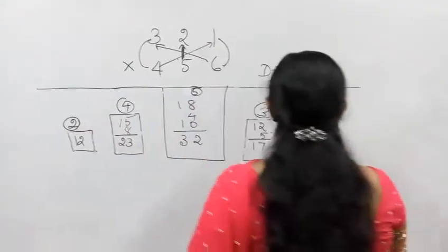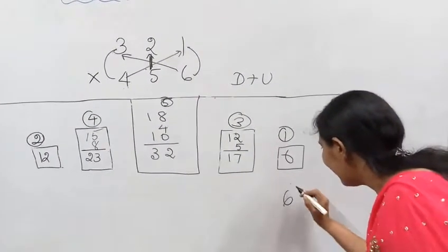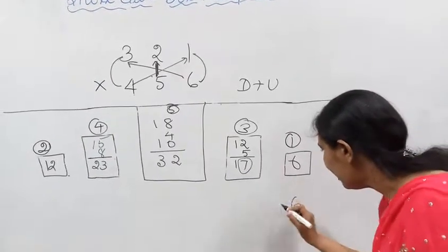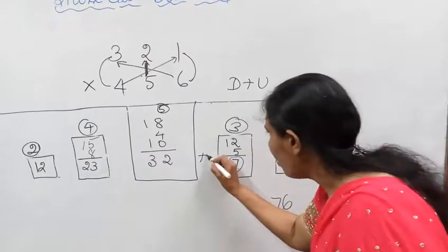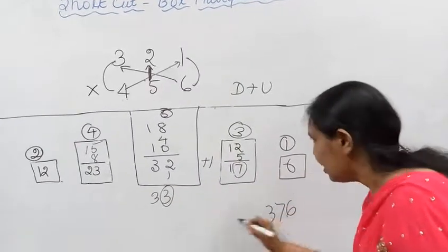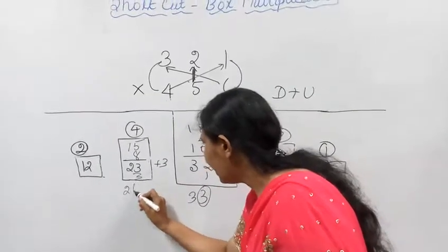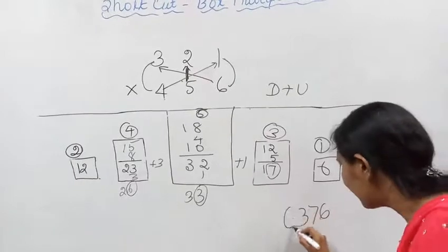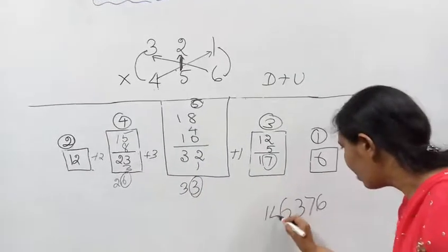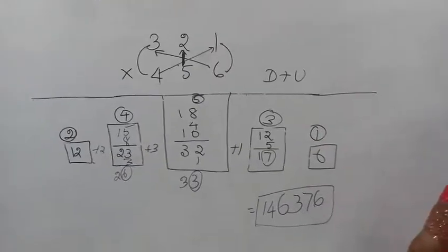Now, write the last number: 6. Then 17 — write the last number: 7, remaining 1. Plus 1 gives 33 — write last number: 3, remaining 3. Plus 3: 23 plus 3 is 26 — write last number: 6, remaining plus 2. 12 plus 2 is 14. This is the answer: 1, 4, 6, 3, 7, 6.